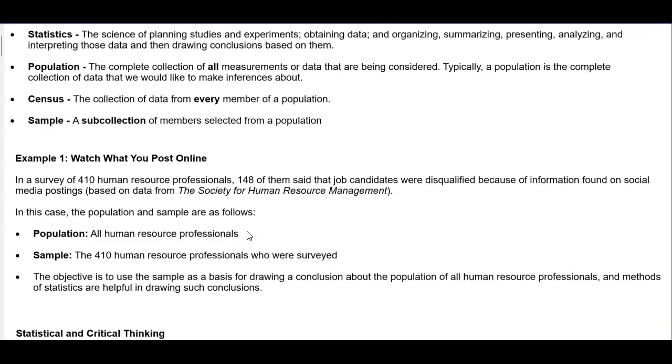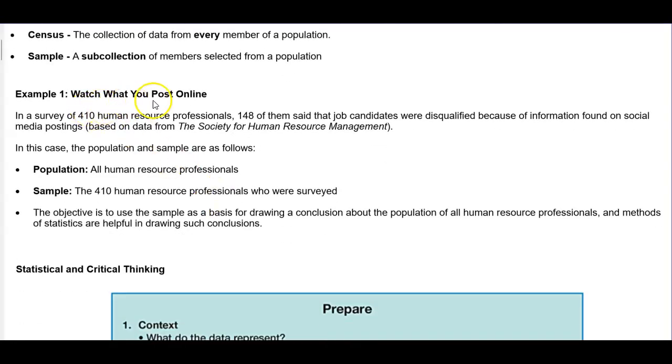Let's take a look at an example. Example 1: Watch what you post online. In a survey of 410 human resource professionals, 148 of them said that job candidates were disqualified because of information found on social media postings. This was based on data from the Society of Human Resource Management. In this case, we want to identify the population and sample.